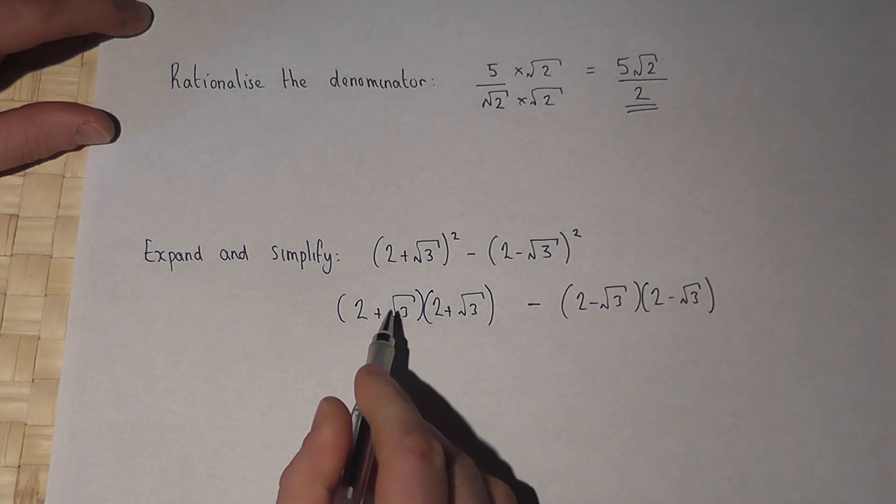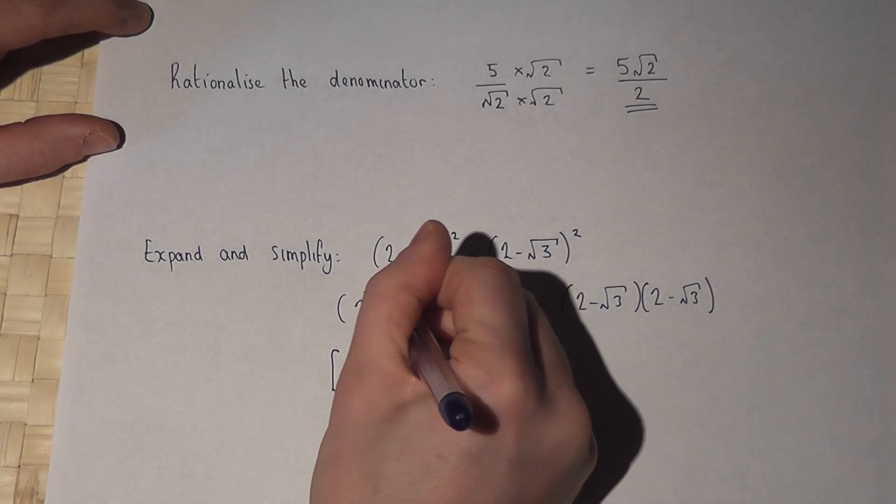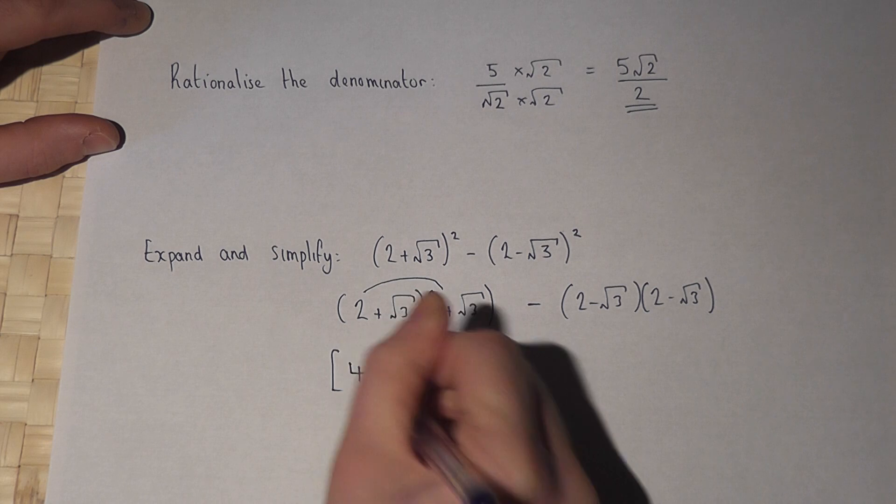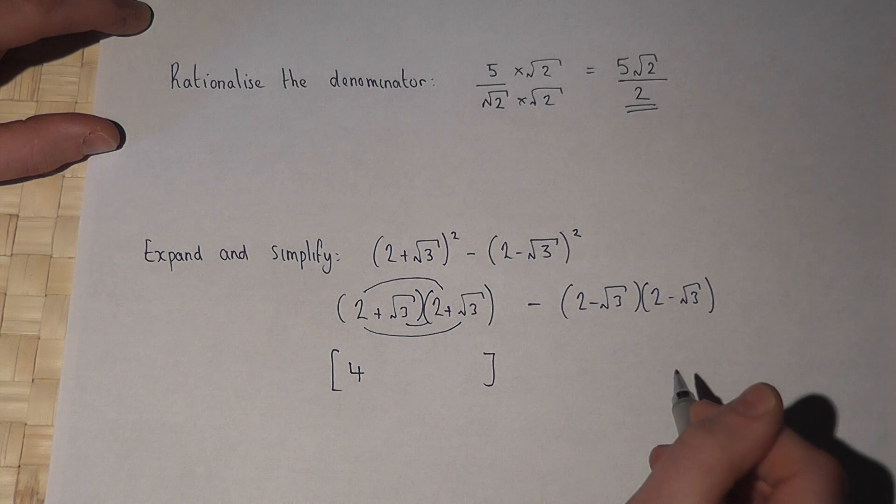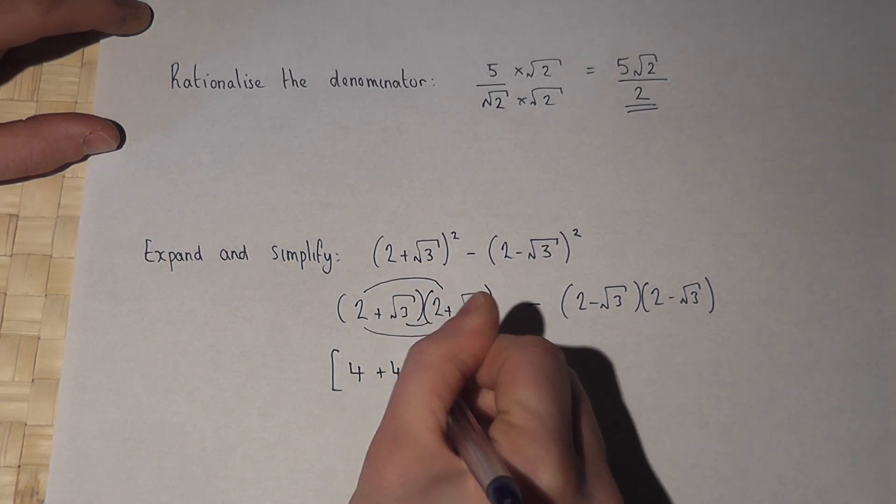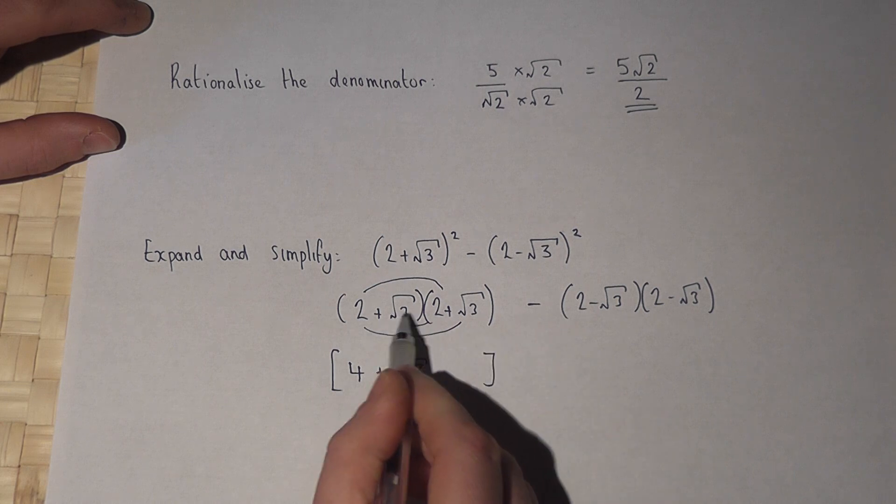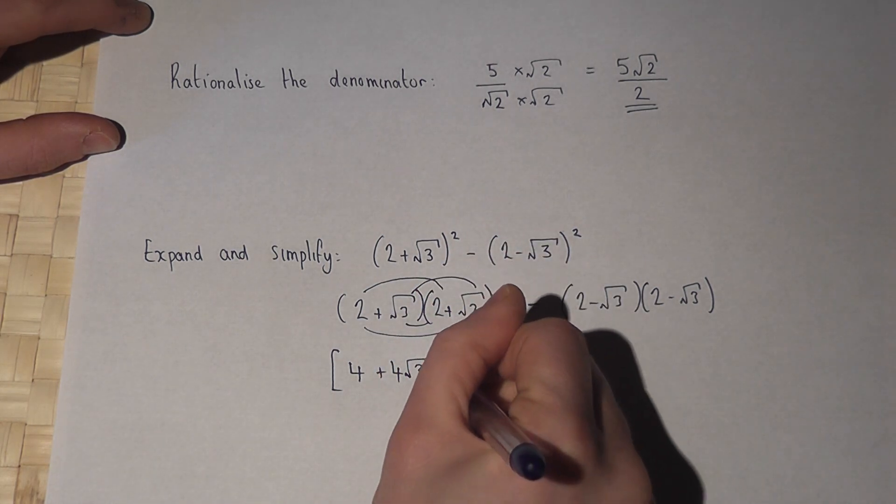Now then, if we expand this bracket, we get 2 times 2 is 4. We get 2 root 3 from that and another 2 root 3 from there, which is 4 lots of root 3. And then root 3 times root 3 is root of 9, which is just 3.